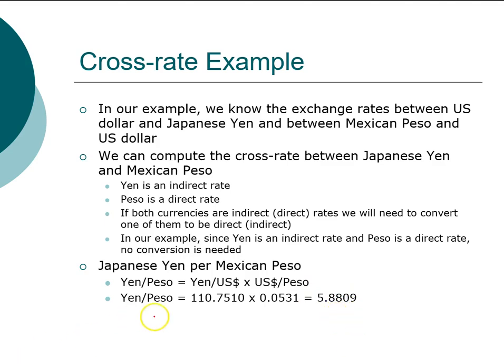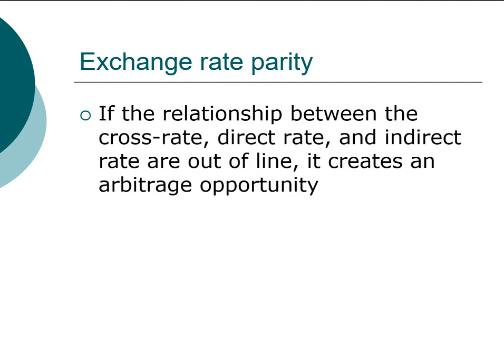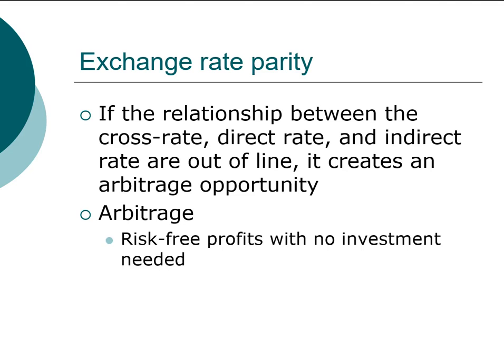You can take a moment to compute other cross rates, such as yen and British pound. You may ask: how do we know the yen-peso exchange rate can be computed from yen-dollar and dollar-peso rates? The answer is a theory called exchange rate parity, which says the cross rate must hold. If it doesn't hold, it creates an arbitrage opportunity — defined as the ability to make profit without making any investment, essentially a risk-free profit with no investment.